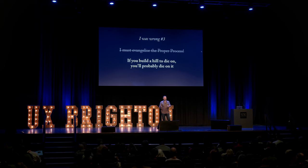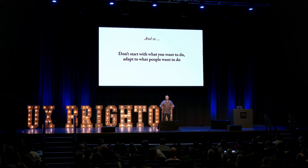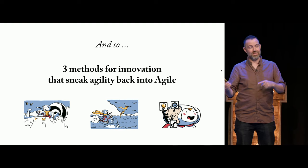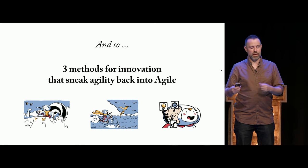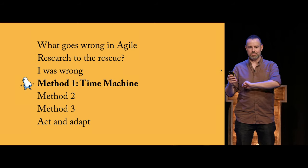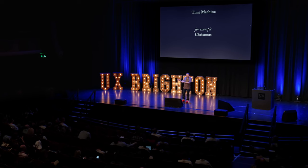So don't start with what you want to do — adapt to what people want to do. Work from where people are and make small changes. I'm going to share three methods that sneak agility back into agile, that actually do work. The first one is the Time Machine — all about where should we start. It's a kind of prioritization: we want to start in the right place so we have time and energy to adapt later if we need to.